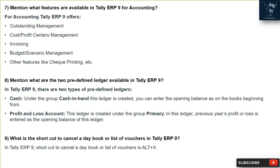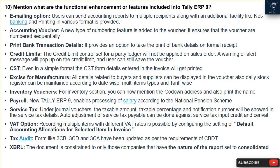Question 9: What is the shortcut to cancel a day book or list of vouchers in Tally ERP9? In Tally ERP9, the shortcut to cancel a day book or list of vouchers is Alt + X.